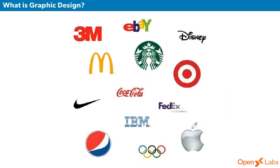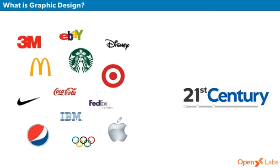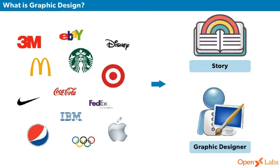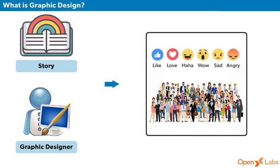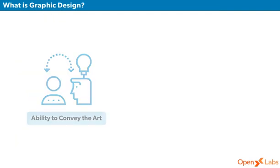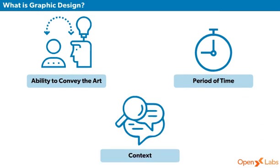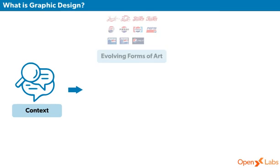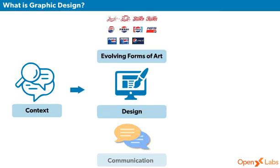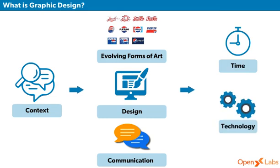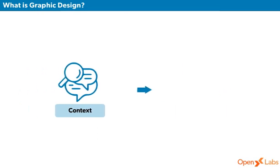There is also a fourth element that comes into the foray: Context. Think about some of the most famous icons of the 21st century. Behind each of these logos, there is a story and a graphic designer tasked with the unimaginable job of capturing the hearts and minds of his or her audience of billions of people. Graphic designers' success in managing to do so rested upon their ability to convey the art form that made sense for that period of time. This brings us to context. Context involves understanding the evolving forms of art, design, and communication that are relevant to the time and the technology available in that time period. Overall, this is a huge consideration in graphic design.